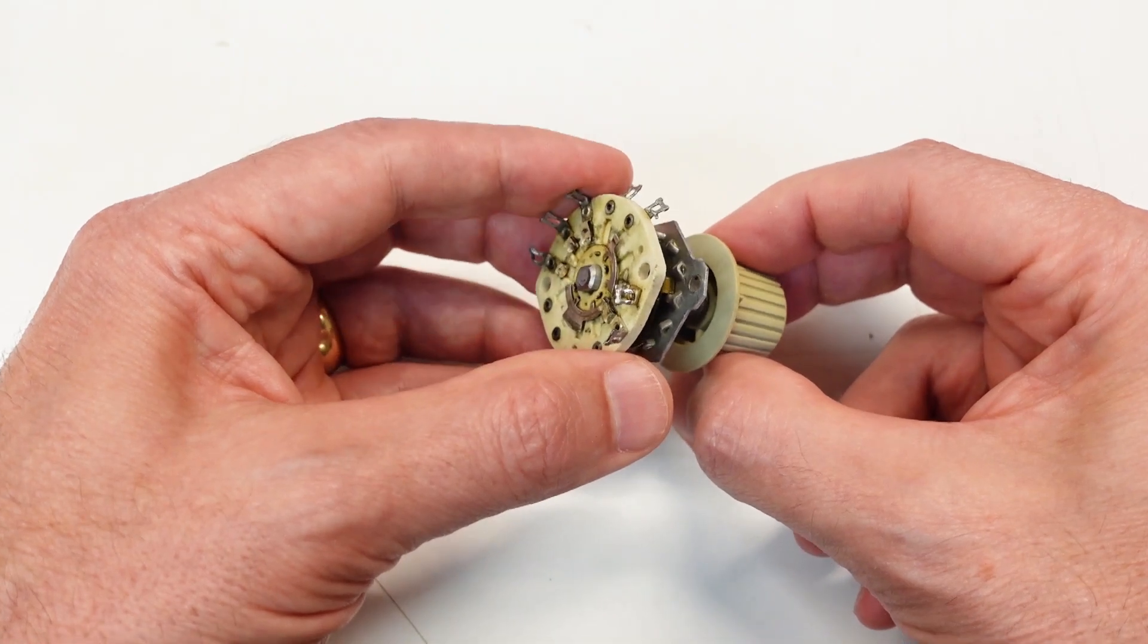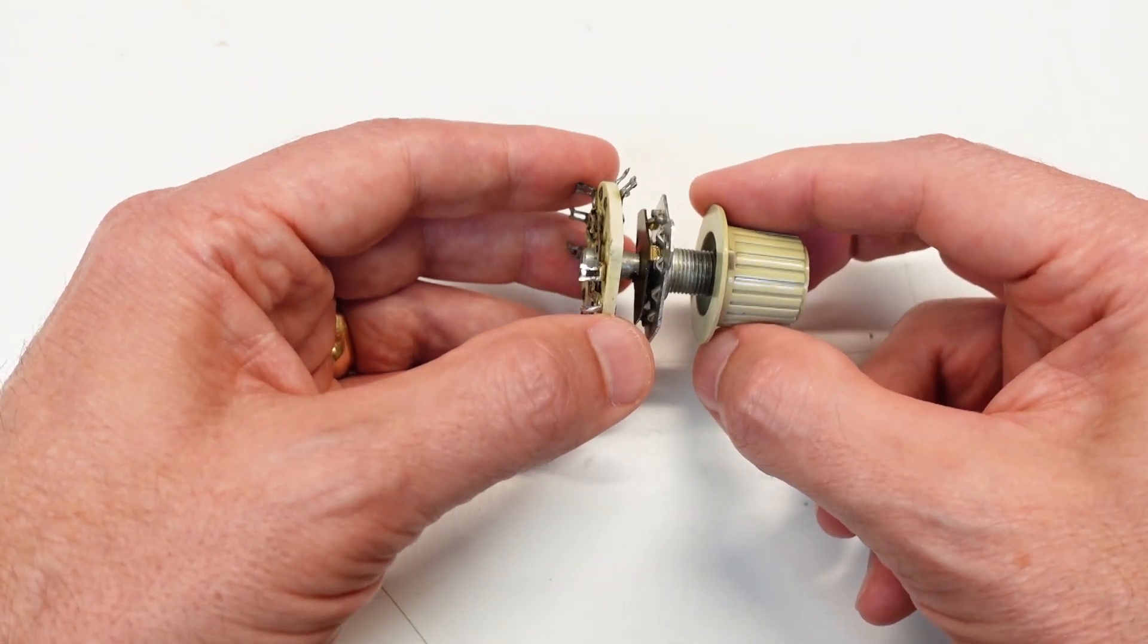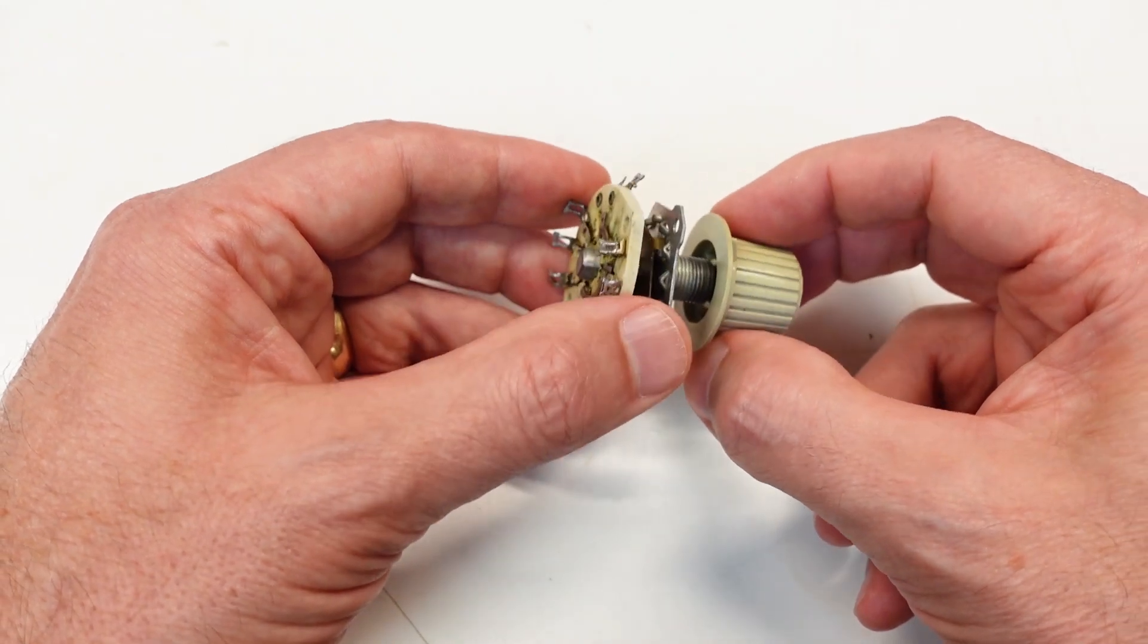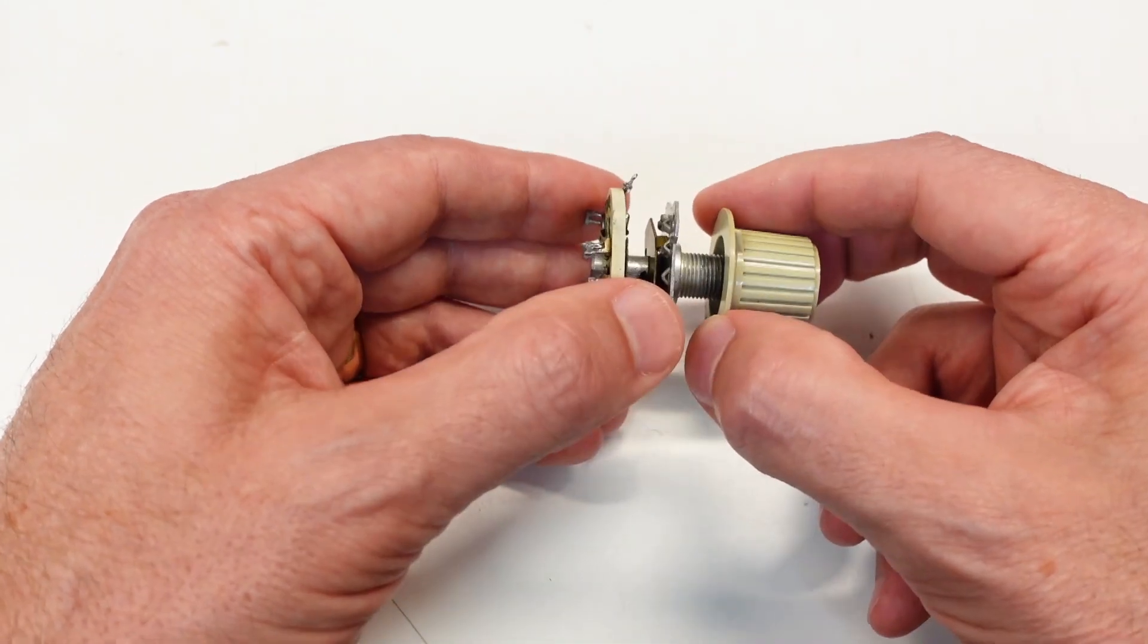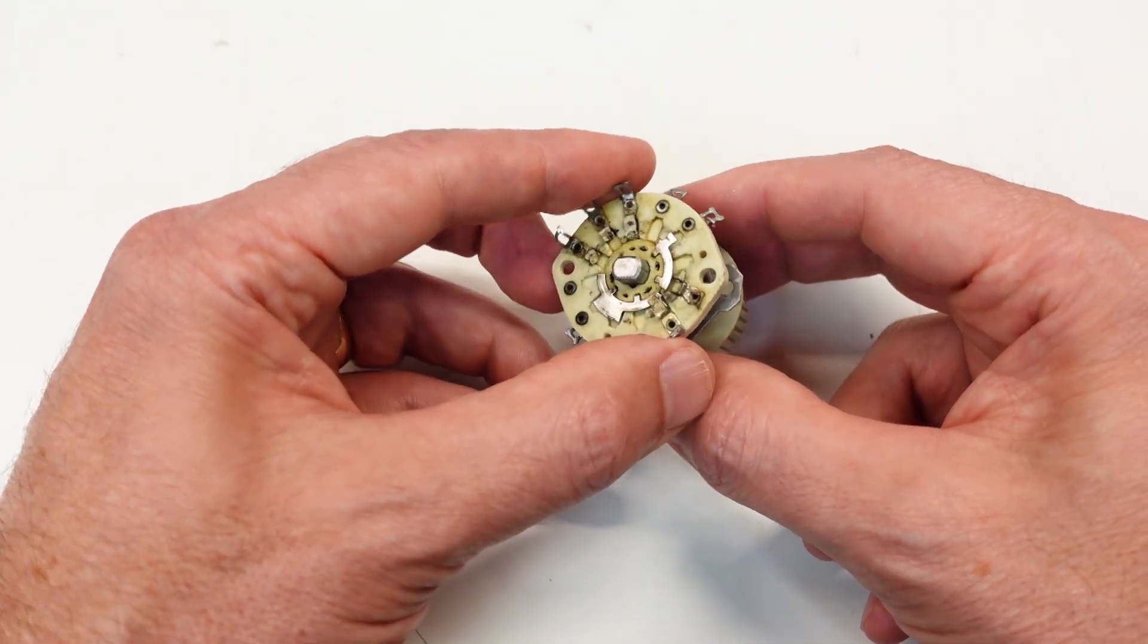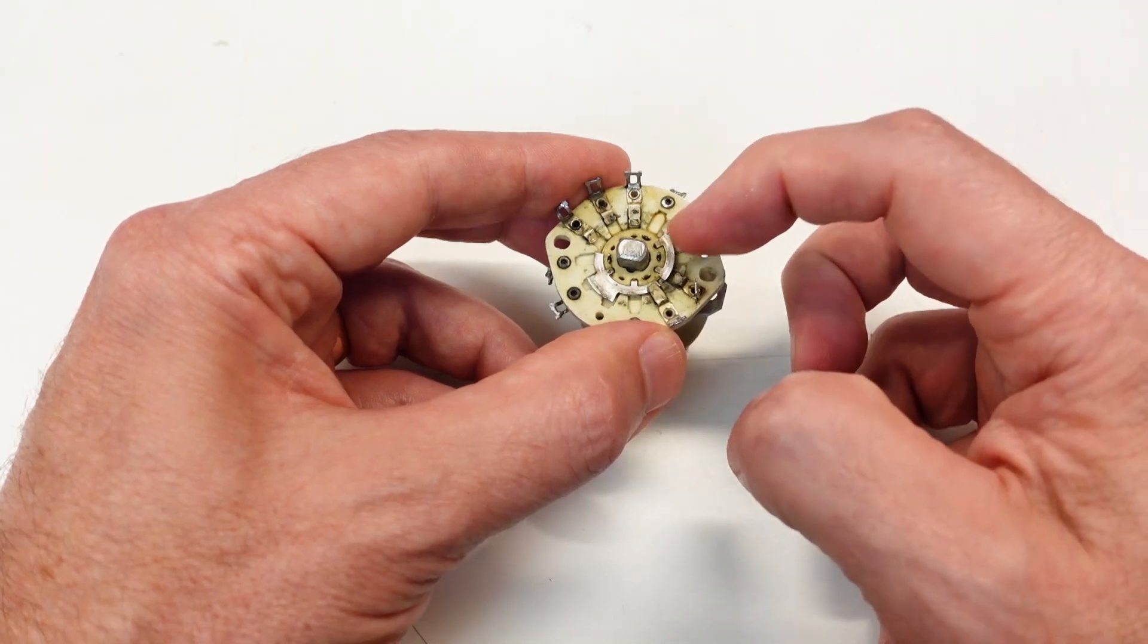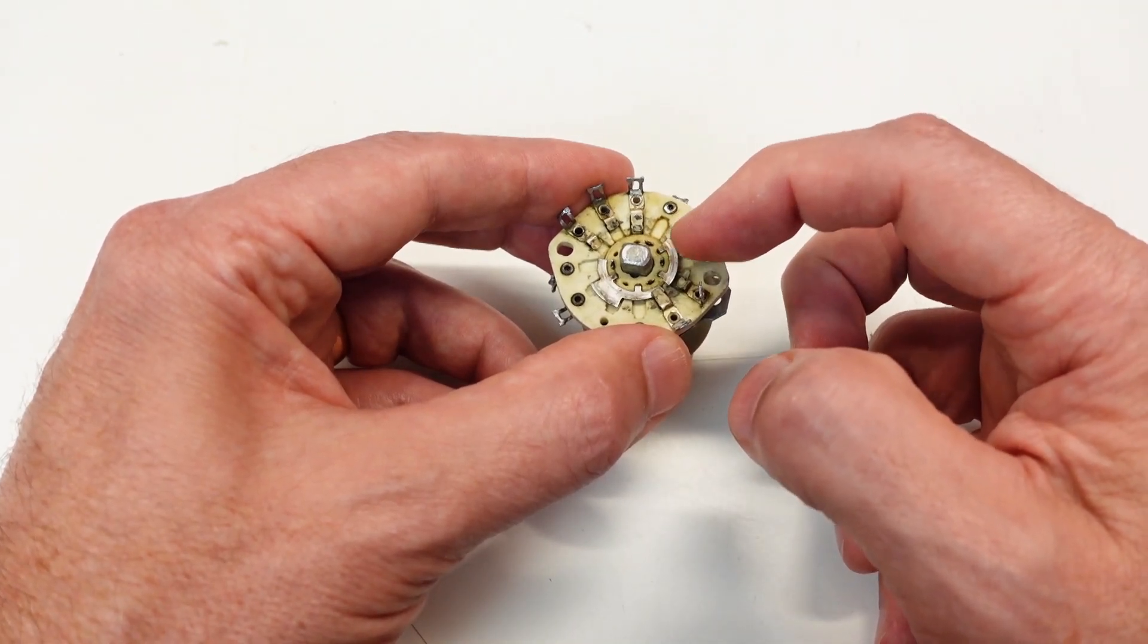I'll call this portion here the switch deck, and then the rest of this is the mechanical portion, the mechanical assembly with the detents and everything else, the front bushing, and I don't have it put completely back together yet. I don't have the screws and washers put in place because I want to illustrate some of the things here I found on the switch deck.